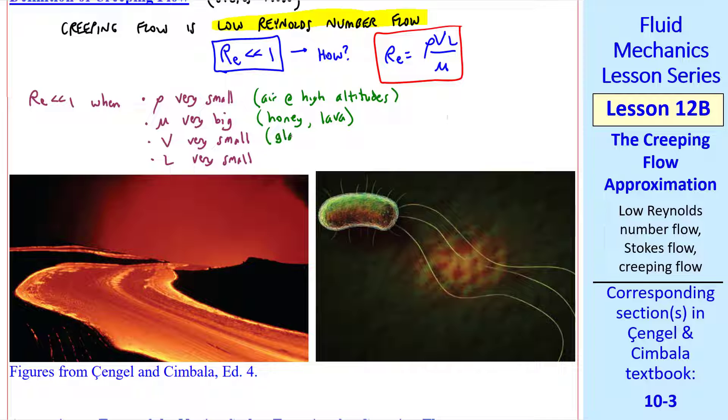An example of the third case would be the flow of glaciers, where the speed is extremely small. It takes months or even years to move a few meters. And an example of the fourth case is microorganisms, as in this picture.